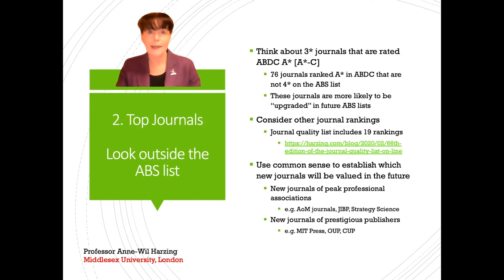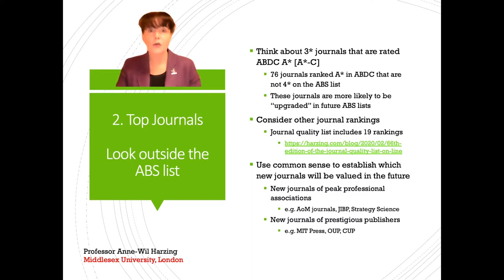If you work in business and management, you'll have heard of the ABS journal ranking list, which many business schools use to assess publication quality. You might want to look at three-star journals that are ranked highly in other journal ranking lists — there are many lists available. On my website you'll find a ranking list integrating at least 18 different rankings. Also consider new journals, as it's usually easier to publish in new journals in their first volumes, and if they become more prestigious later, you'll have already published there.